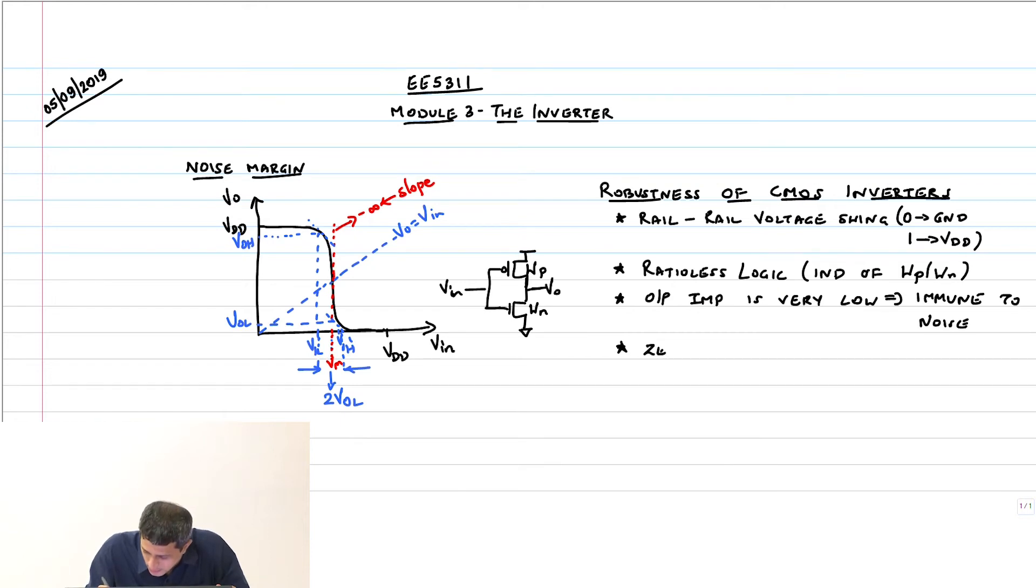0 gate current implies if you are not worried about delays, this is infinite fan out. What does this mean? If I have an inverter like this, fan out is basically how many other gates it can drive, what load it can drive. I am going to drive 1, 2, 3 gates and so on.